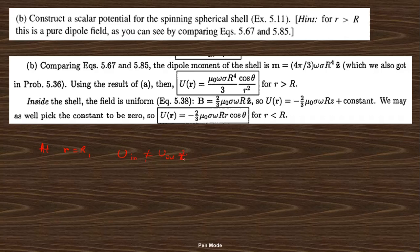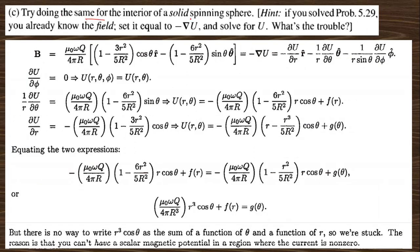The scalar magnetic potential expressions are given for the interior and exterior regions. However, the scalar magnetic potential does not work where the current is not zero. Trying the same approach for a solid spinning sphere: the magnetic field inside is known, and if you take the gradient of the potential and compare, you cannot match the form in terms of r, theta. The reason is that you cannot define a scalar magnetic potential in any region where the current is nonzero.